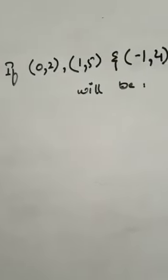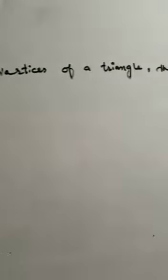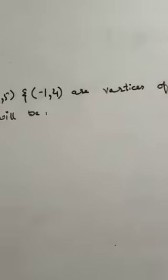A good question came in the paper. If (0,2), (1,5) and (-1,4) are vertices of a triangle, then its perimeter will be.